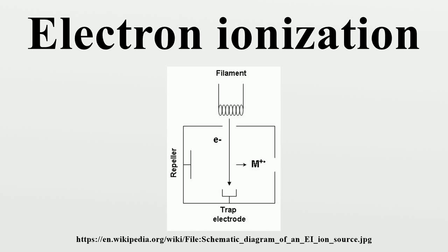Electron ionization is an ionization method in which energetic electrons interact with gas phase atoms or molecules to produce ions. This technique is widely used in mass spectrometry, particularly for gases and volatile organic molecules.